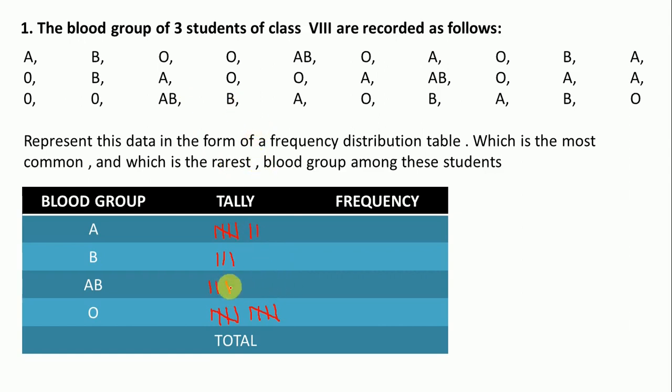O, then A, AB, AB, and next is O, then double A. B, B, then A, O, again is B, so we cross it like this, A.